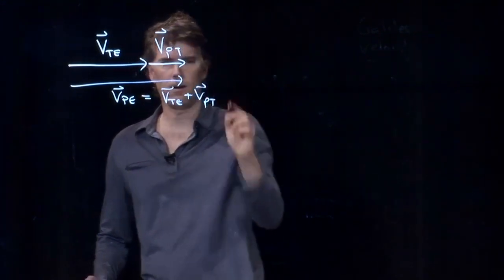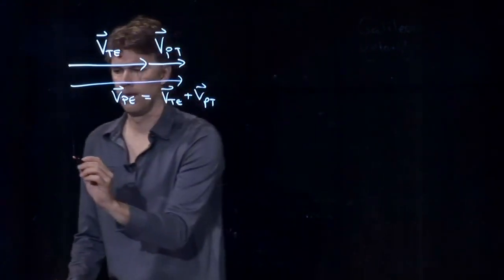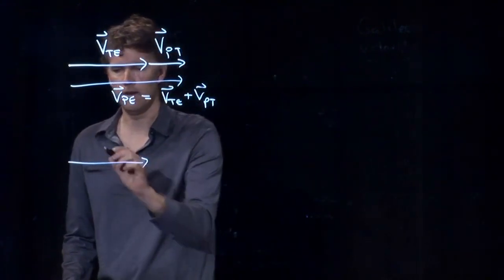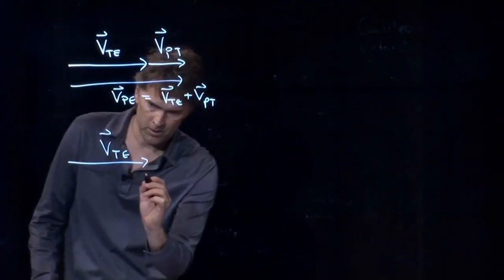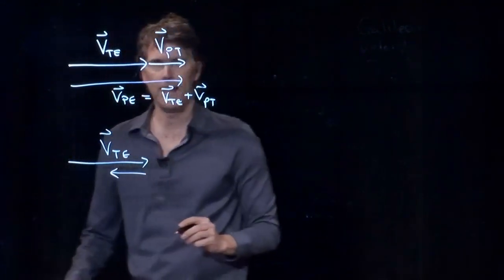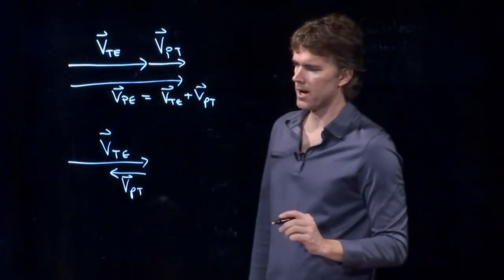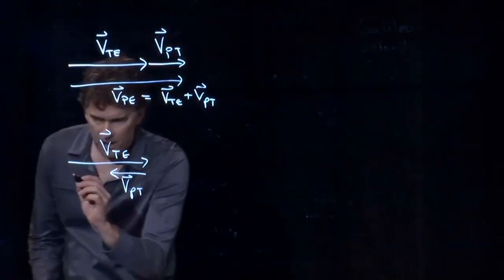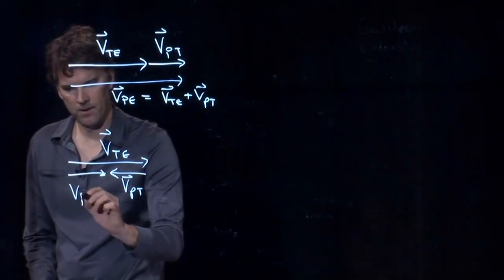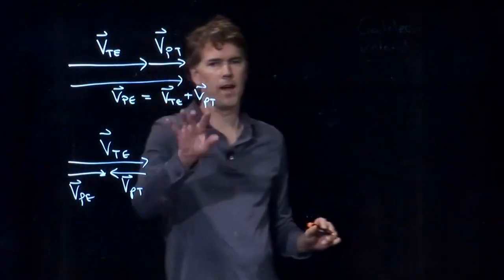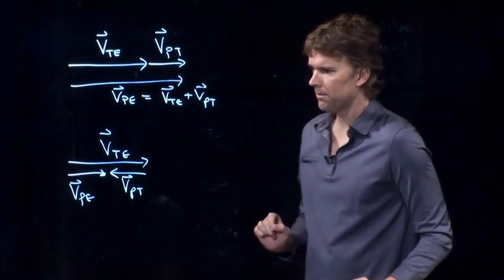But what about when I go the other way? If I'm going the other way, then the velocity of the train relative to the Earth, I have to add a negative velocity of the person relative to the train, and therefore the sum is going to be that little bit right there. And so in that case, we're going to get 40 miles per hour. In this case, we're going to get 20 miles per hour.